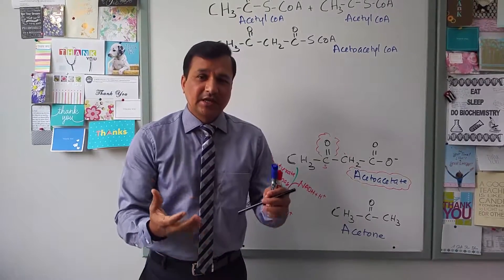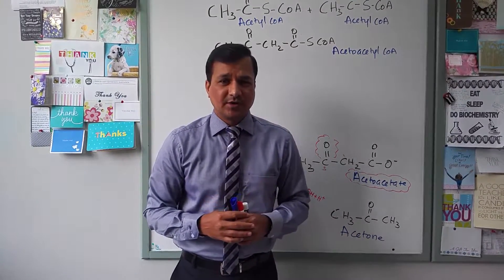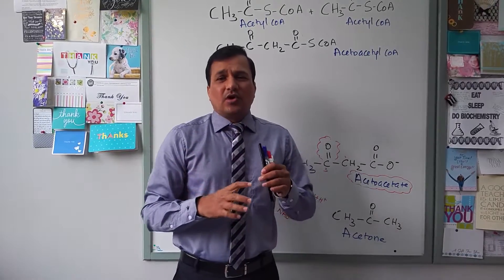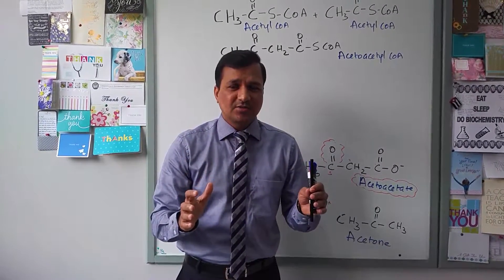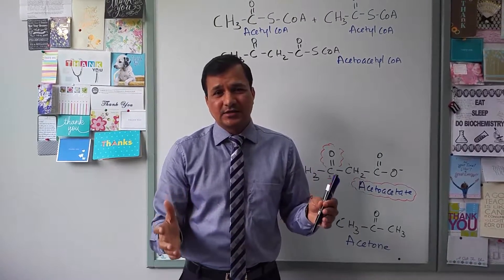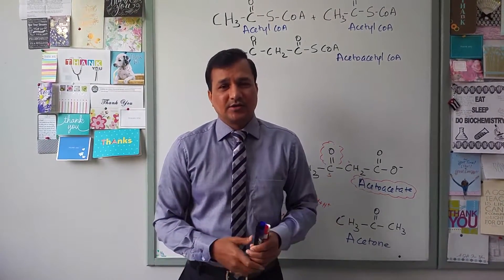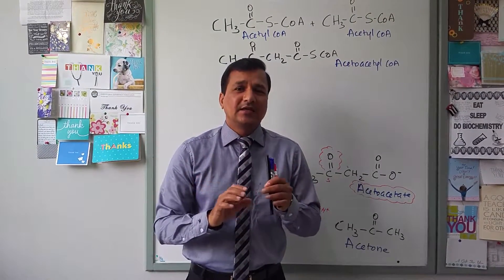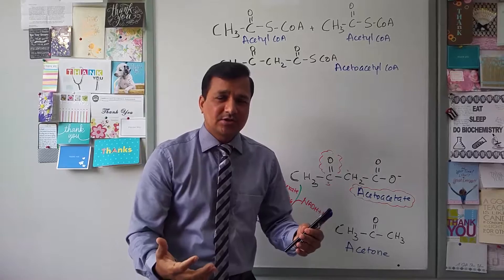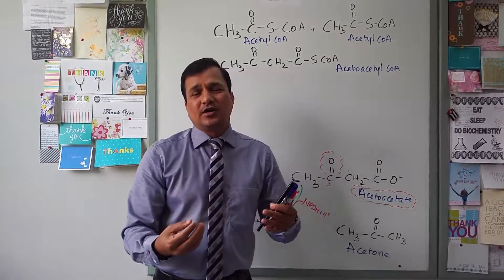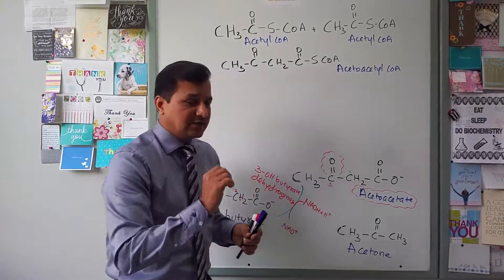Acetoacetate and beta-hydroxybutyrate in the blood, coming from the hepatocytes, are taken up by peripheral tissues. All peripheral tissues can use ketone bodies except the liver and red blood cells. The liver synthesizes ketone bodies but does not use them — I will explain why shortly. RBCs lack mitochondria, so they simply cannot use ketone bodies. All other tissues can technically use ketone bodies, though some use them as a more predominant energy source than others.